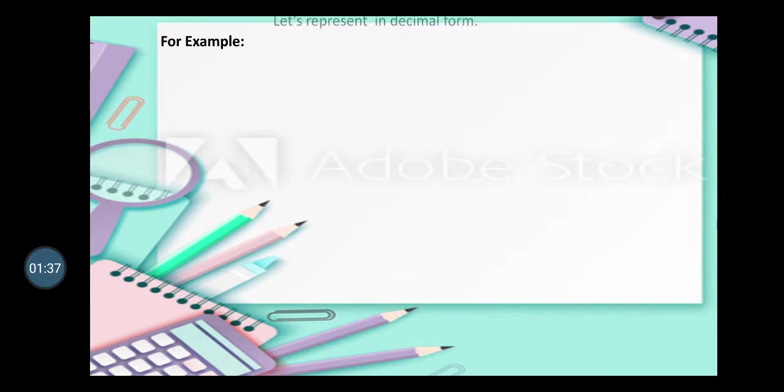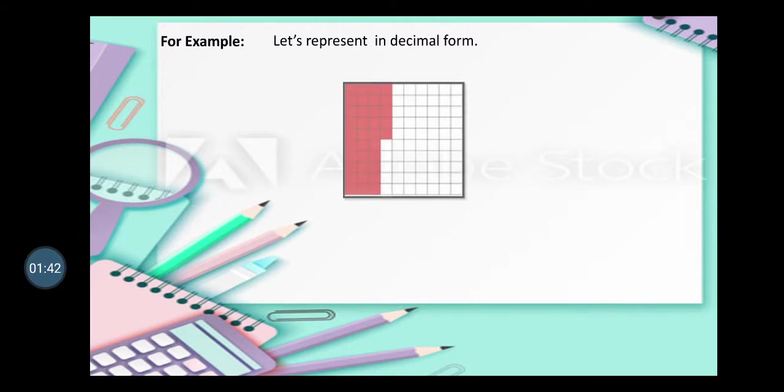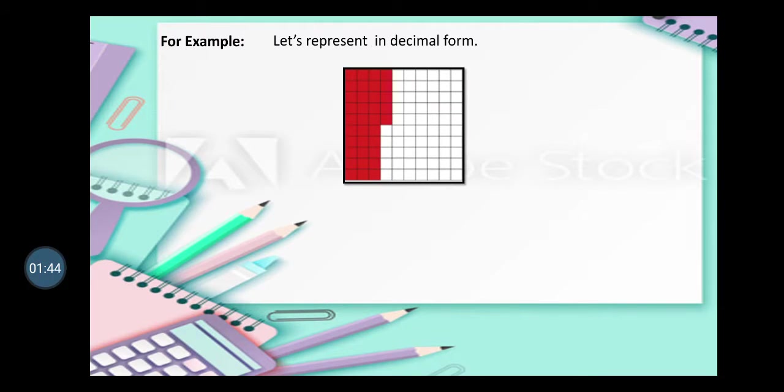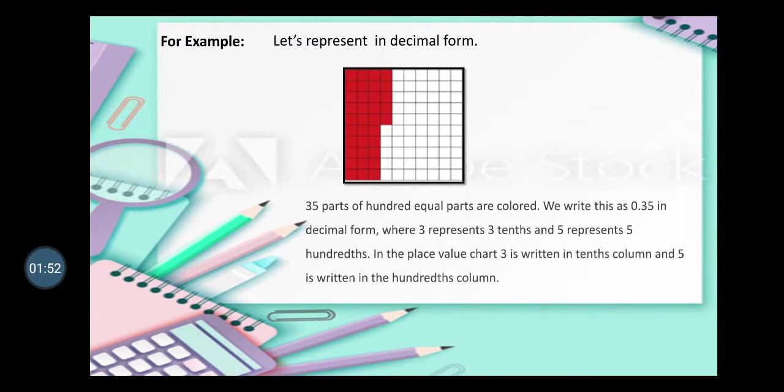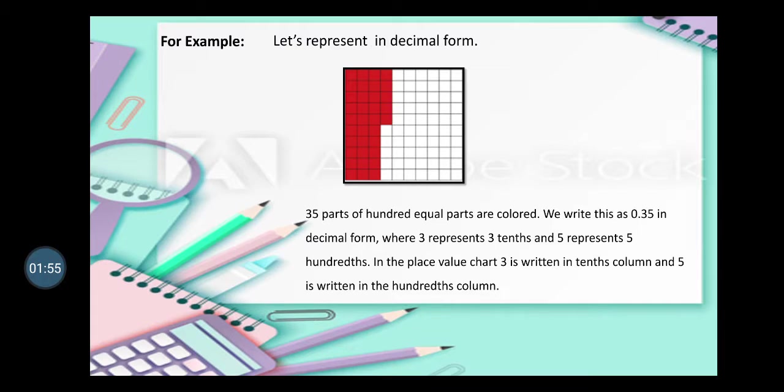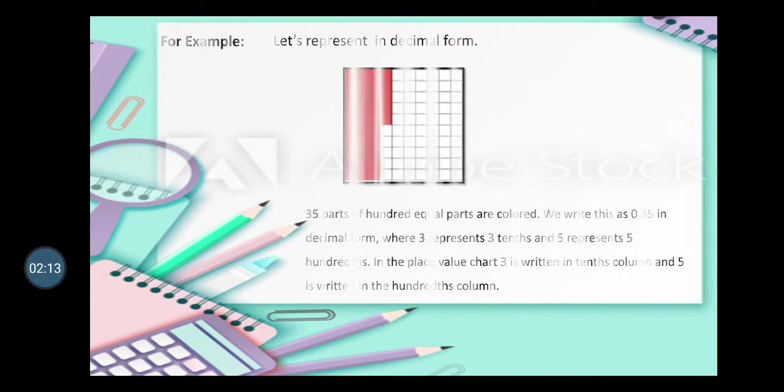For example, let us represent in decimal form. We have a picture and the picture is divided into hundred equal parts, and 35 parts of the hundred equal parts are colored. We write this as 0.35 in decimal form, where 3 represents 3 tenths and 5 represents 5 hundredths. In the place value chart, 3 is written in the tenths column and 5 will be written in the hundredths column.